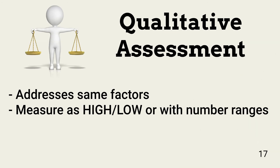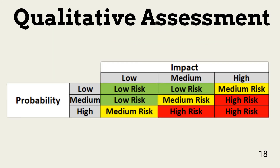A qualitative assessment addresses the same factors as a quantitative approach. However, instead of using dollars, it uses values that represent levels of risk, such as high, low, or a range of numbers. A sample simple qualitative risk matrix takes into account both probability of occurrence and resulting business impact. Impact is determined by working with management, who will think in terms of losses from business-critical functions, fines, litigation, etc. The dollars will not be exact, but they will be close enough. This table works well for natural disasters and other non-human threats, but falls short when assessing human threats.